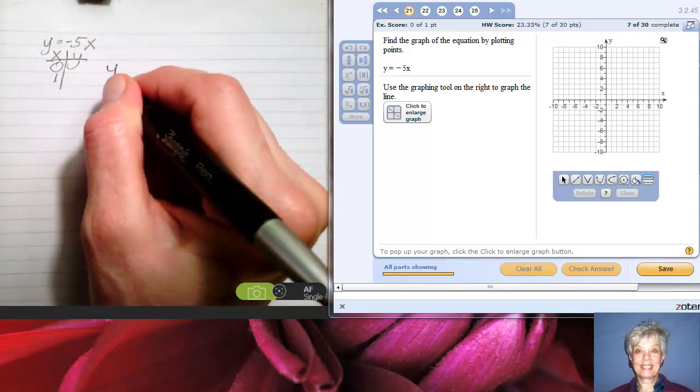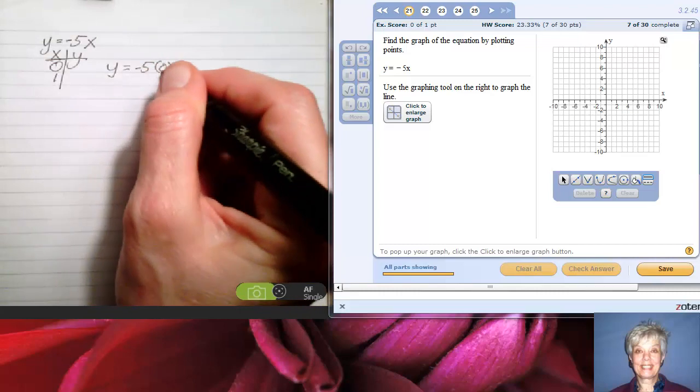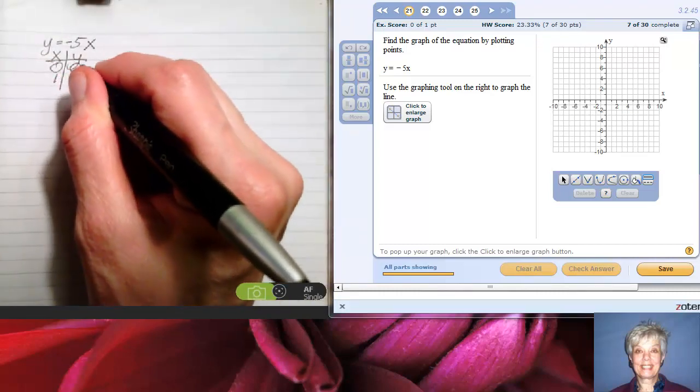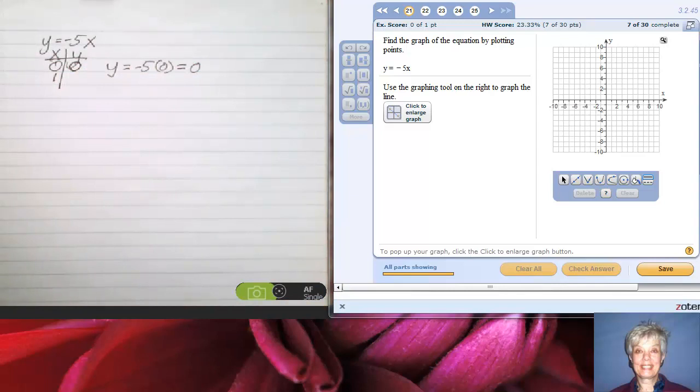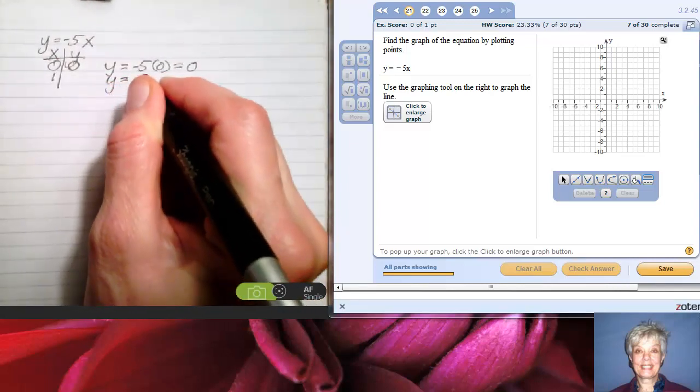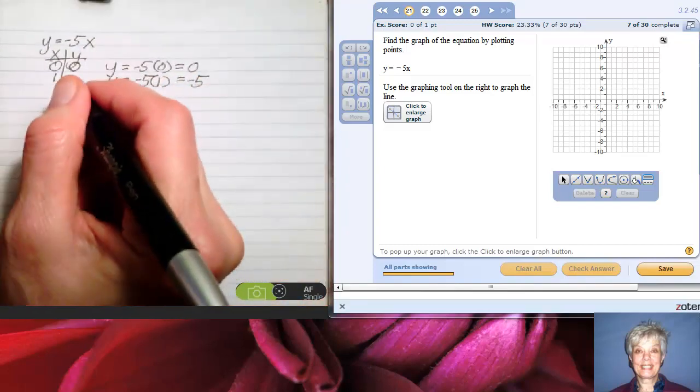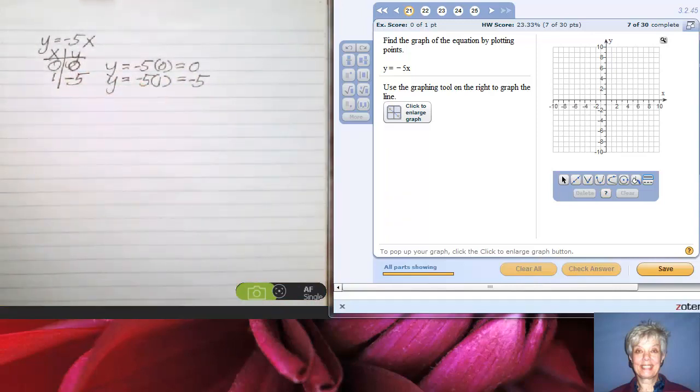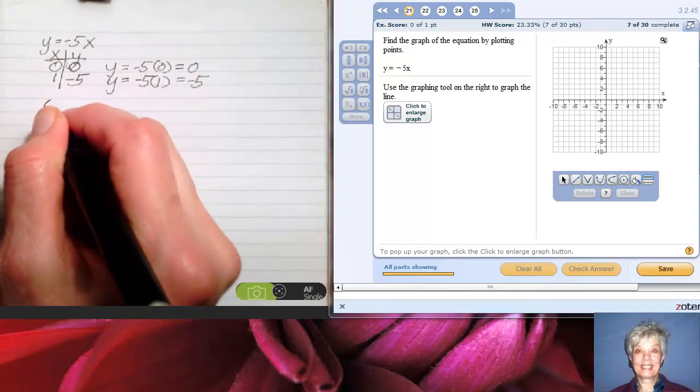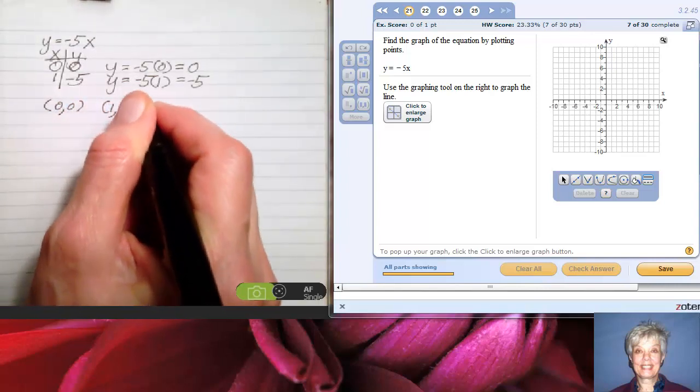Alright, here I'll have y equals negative 5 times 0 if x is 0. That will be negative 5 times 0, which is 0. So the point will be one of my points. Let me list them. Let's try y equals negative 5 times 1. That will be negative 5. So the point (1, -5) will also be one of my points. Let me list them. I'll have the point (0, 0) and I'll have the point (1, -5). Let's graph them.